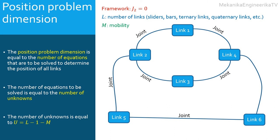However, in a mechanism there are some degrees of freedom that are controlled externally — this corresponds to the mobility M. If mobility is M, there should be M inputs, meaning M parameters can be considered as given and not unknowns. Thus, the total number of unknowns in a position problem is equal to L-1-M, and the position problem will be written in terms of L-1-M independent equations.